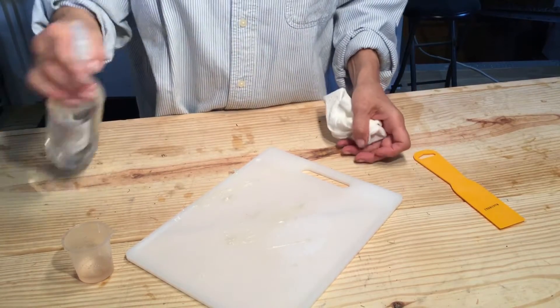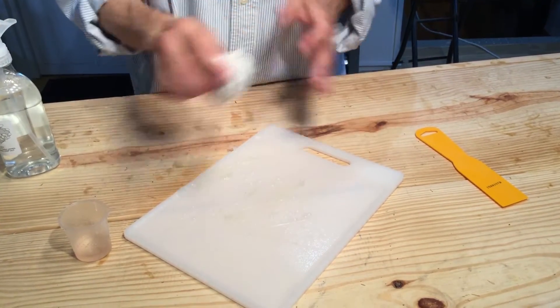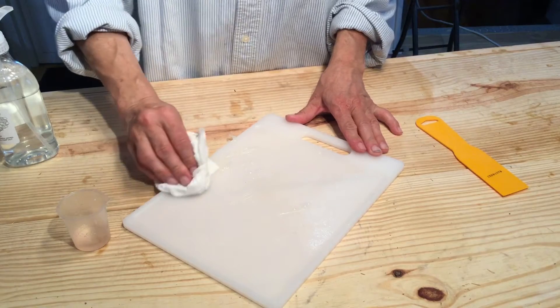It's that easy. Art's Citrus Spray is also perfect to clean up your plastic cutting board. Simply spray and wipe.